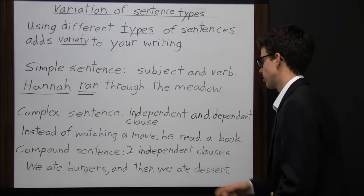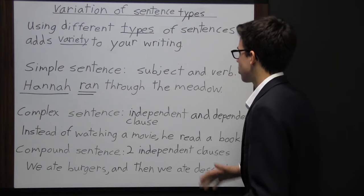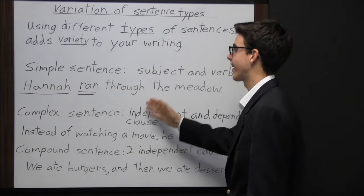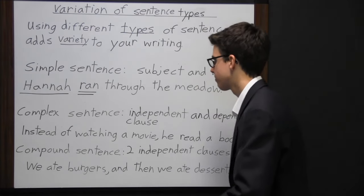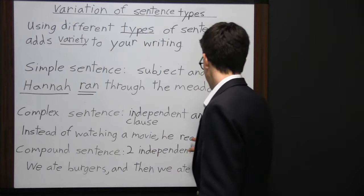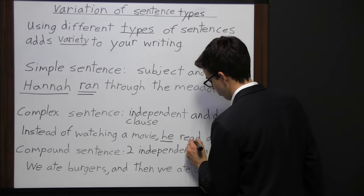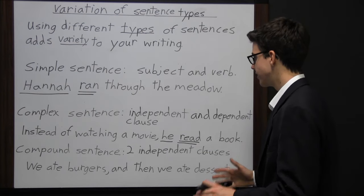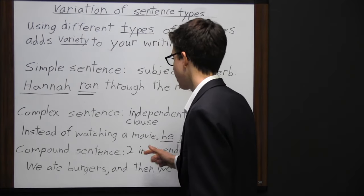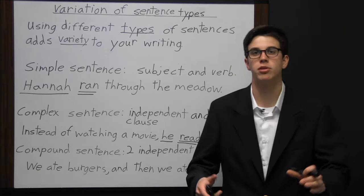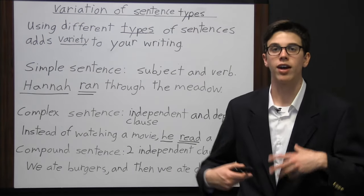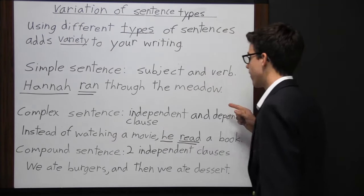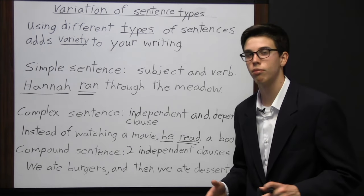A complex sentence has an independent clause and a dependent clause. The independent clause can stand alone — it has a subject and a verb. For example: 'Instead of watching a movie, he read a book.' The independent clause is 'he read a book' — subject he, verb read. The dependent clause is 'instead of watching a movie,' because that phrase alone isn't a complete sentence. Together, the independent and dependent clauses form a complex sentence.